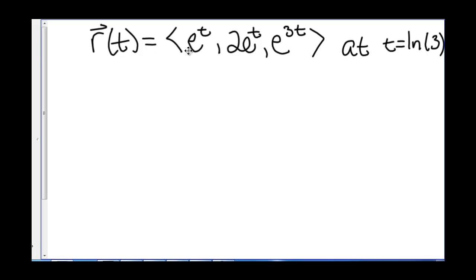Now let's have you try one. We have r(t) = ⟨eᵗ, 2eᵗ, e^(3t)⟩, and we're evaluating at t = ln(3). Go ahead and pause the video and give it a try, and when you're ready come back and look at the answer.